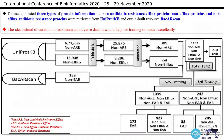This slide talks about the data curation, compilation, and distribution. I have used three types of protein information as mentioned here. The data is taken from UniProt and in-built resources like BacPred. This is the overall statistic of the data. Initially we found this much data. After that, we removed the redundancy among the sequences using CD-HIT at 40%, and then we annotated the sequences. We finally came up with a total of 1,342 sequences.